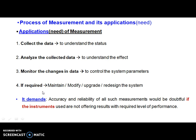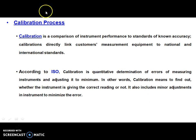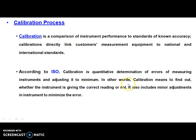These applications of the measurement process demand accuracy and reliability of the instrument that we use. The instrument should perform at the required level of performance, and for that purpose we need to analyze the status of the instrument. That can be done with another process called the calibration process. Calibration is the comparison of instrument performance under evaluation with a known standard of known accuracy. According to ISO, calibration is the quantitative determination of errors of a measuring instrument under consideration, adjusting it to a minimum. In other words, calibration means finding out whether the instrument is giving correct readings or not, and it also includes minor adjustments.